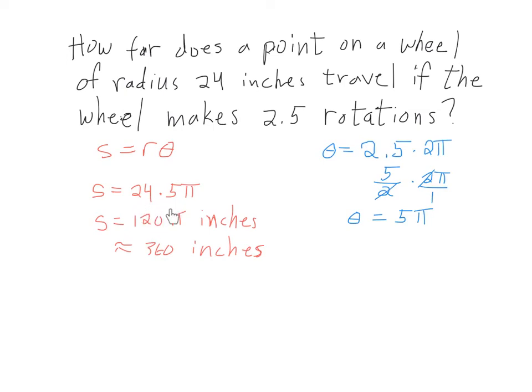And since our angle's in radians, we'll just come over here and multiply that by the length of our radius, and 24 times 5—let's see, 20 times 5 is 100, 4 times 5 is 20—so very quickly we can get 120 times π inches. And there's the exact answer. Now, approximately, I'm thinking 360 inches, though I know it's more than that because I'm just doing 120 times 3. If we actually multiply 120 times π, my calculator is giving me about 377 inches.